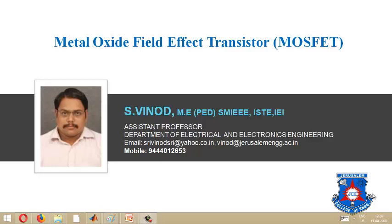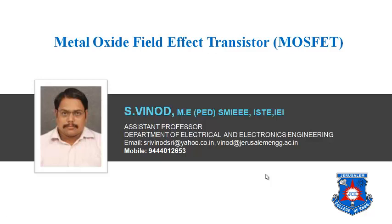Good morning. Today let us discuss about MOSFET, that is Metal Oxide Field Effect Transistor. MOSFET is a voltage control device, meaning the device is controlled by voltage. Before the invention of MOSFET, devices starting from diode, then transistor, SCR, and TRIAC were all current control devices — they are turned on and turned off by electric current. MOSFET was the first voltage control device, meaning turn on and turn off is done by voltage applied across the gate.